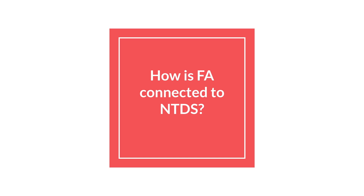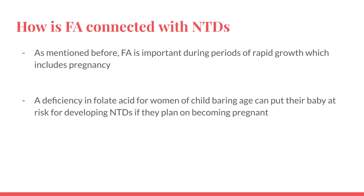How is folic acid connected to neural tube defects? As mentioned before, folic acid is important during periods of rapid growth, which includes pregnancy. A deficiency in folic acid for women of child-bearing age can put their baby at risk for developing neural tube defects if they plan on becoming pregnant.